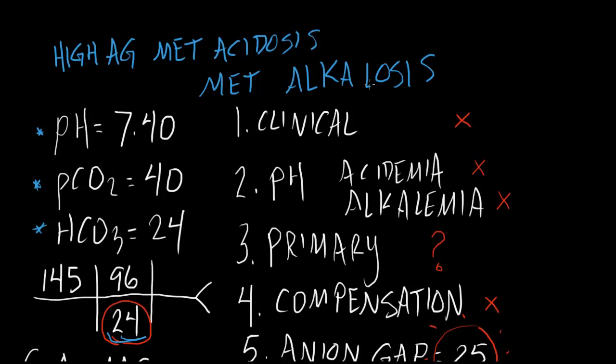And a metabolic alkalosis. How is this possible? Well, it's easy. You have a patient who's vomiting profusely, creates a metabolic alkalosis. That particular patient becomes so volume depleted that they develop lactic acidosis, leading to a metabolic acidosis.